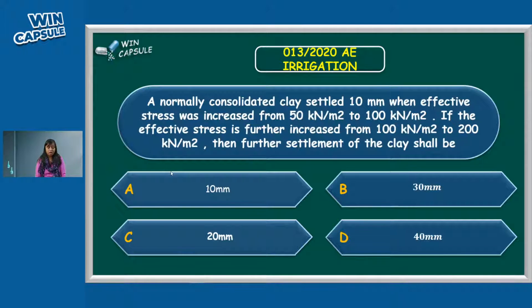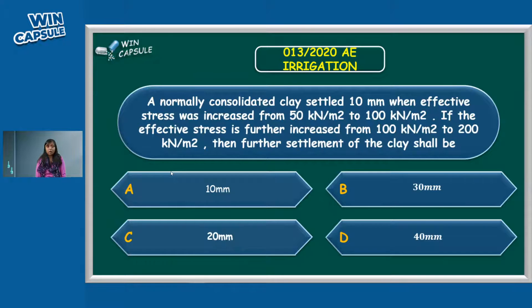Second question: Settlement in a 10mm layer. Effective stress is further increased from 100 to 200. What is the further settlement? We are asked for the total settlement and the further settlement. This is a relation-type question.